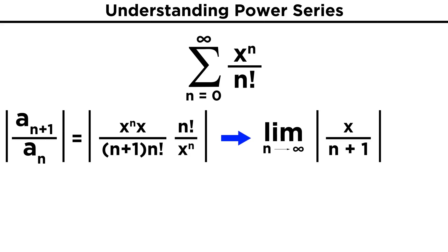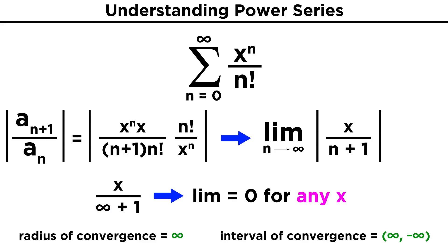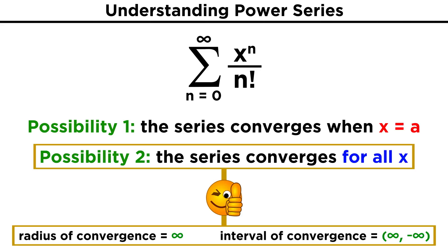Finding the limit as n approaches infinity, we see that we will get zero no matter what the value for x. This means that the radius of convergence is infinity, and the interval of convergence is negative infinity to positive infinity. This fits the second possibility from that theorem, which tells us that this series is always convergent.